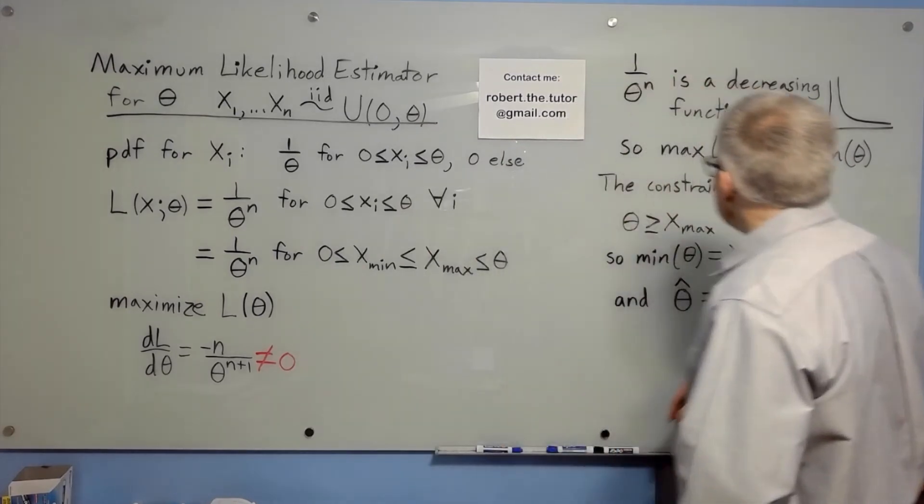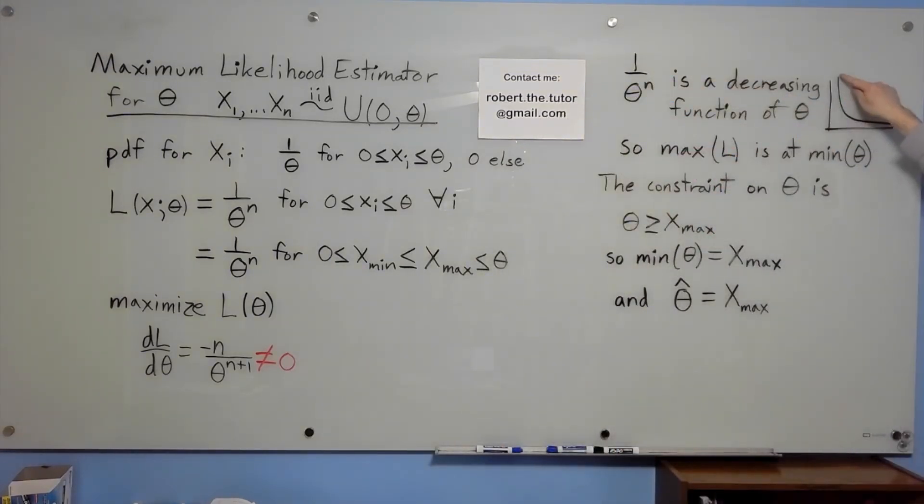The problem is that 1 over theta to the n is a decreasing function of theta. It doesn't have a maximum value.